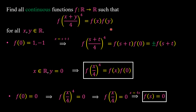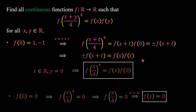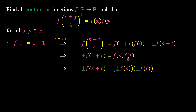By the functional equation, we can replace f((s + t)/4) to the power of 4 with f(s) times f(t). So we have plus or minus f(s + t) equal to f(s) times f(t). Since f(s) times f(t) can be written as f(s)·f(t) or (−f(s))·(−f(t)), we arrive at this functional equation.